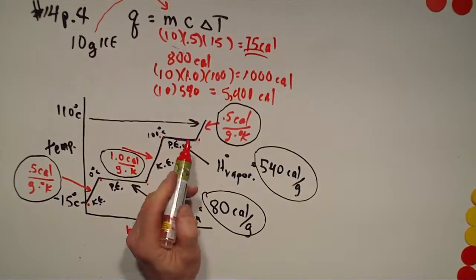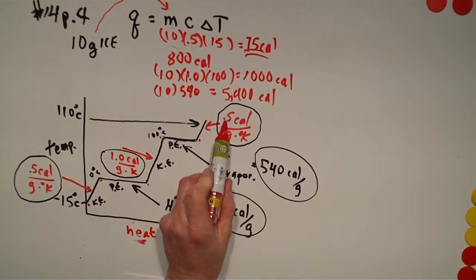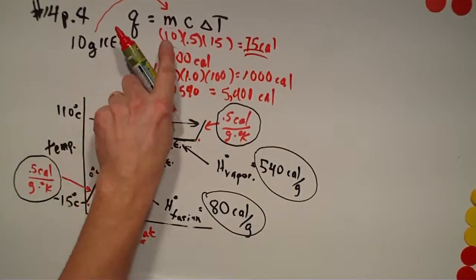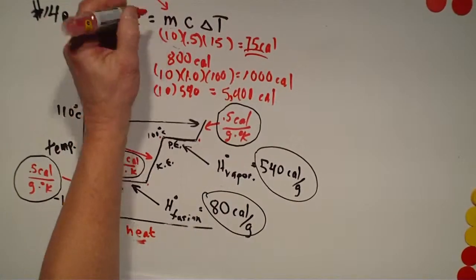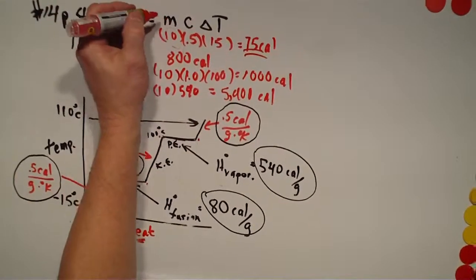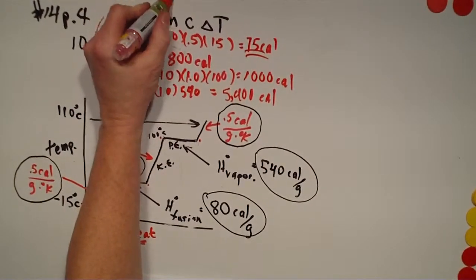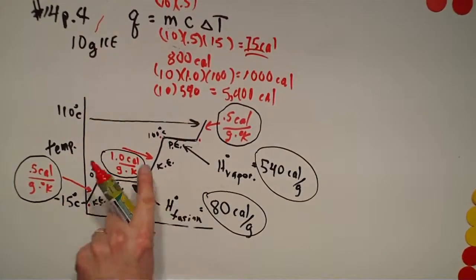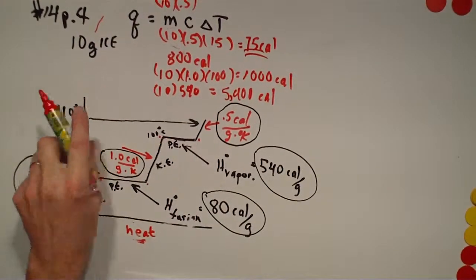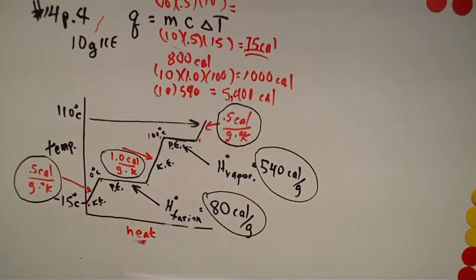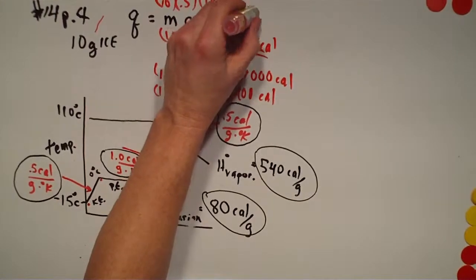Now we're heating the steam. The specific heat for steam is 0.5 calories per gram per degree Kelvin — similar to ice. We have 10 grams × 0.5 × a temperature rise of only 10 degrees (from 100 to 110°C). That very last part is only adding 50 more calories.